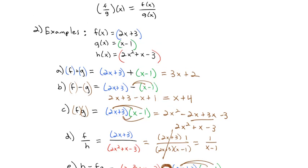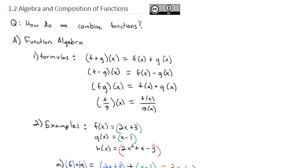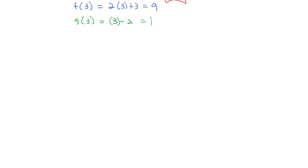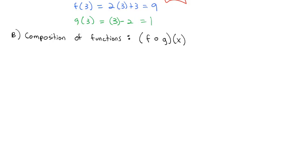When we started function algebra today, I told you there are five formulas and we only did four of them. The fifth operation is composition of functions. The notation is f ∘ g of x — notice that's an open circle, different from a dot or multiplication symbol. It means f(g(x)): we're composing them together. What this really means is we have a function inside of a function — the f(x) function on the outside with the g(x) function sitting inside of it.